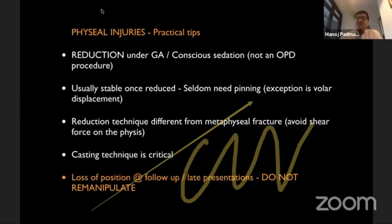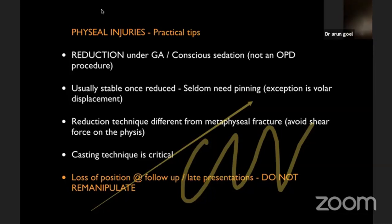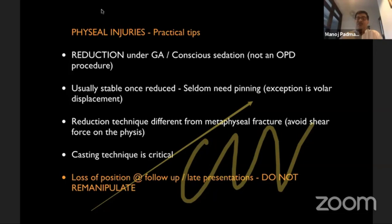A few practical tips. Do not treat these as adult Colles fractures where you can do a hematoma block — you need some form of sedation and muscle relaxation because you need traction. They are usually stable once reduced, unless it's a volar fracture. The reduction technique is different from metaphyseal fractures — you don't want any shear force; you don't want to constantly grate the epiphysis against the metaphysis. Casting technique is critical and that applies to metaphyseal fractures as well. One take-home message from physeal injuries: if there is a loss of position, even after manipulation or if presenting late, do not re-manipulate. There is plenty of evidence that permanent physeal damage can result, causing greater problems than a little bit of malunion which almost always remodels — even with one year of growth remaining, especially in the sagittal plane, they will remodel. A growth arrest has catastrophic sequelae.